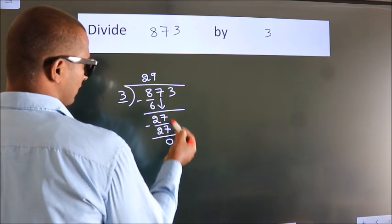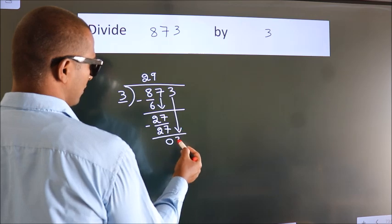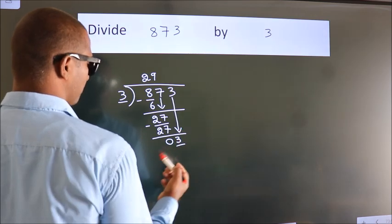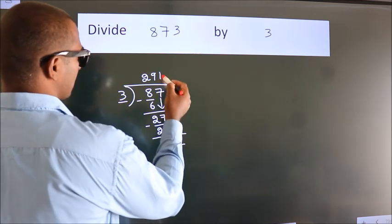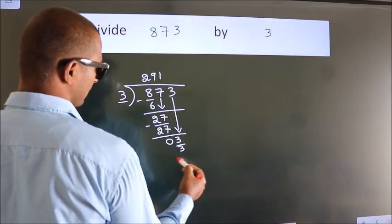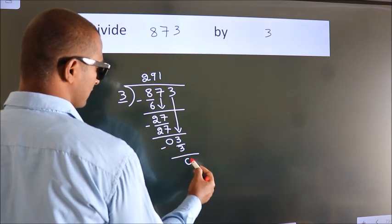After this, bring down the beside number. So 3 down. So 3. When do we get 3? In 3 table, 3 ones, 3. Now we subtract. We get 0.